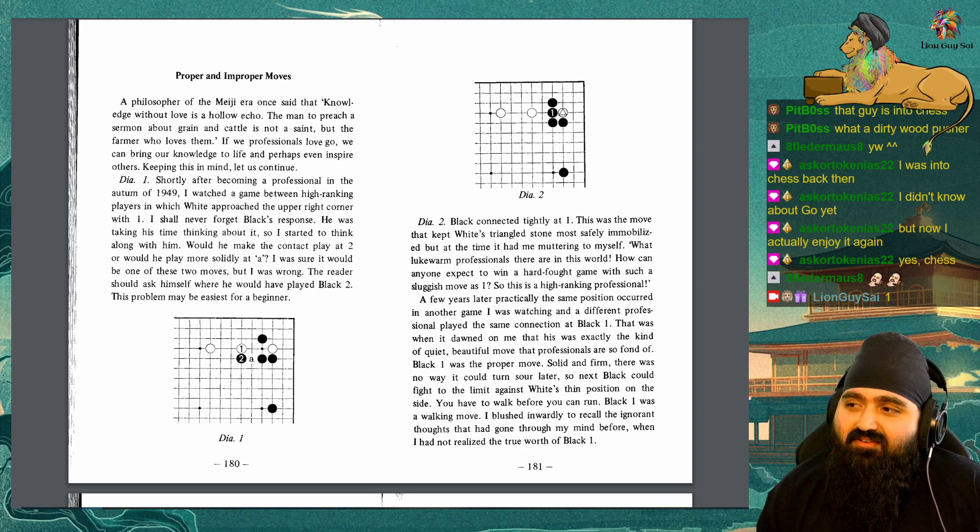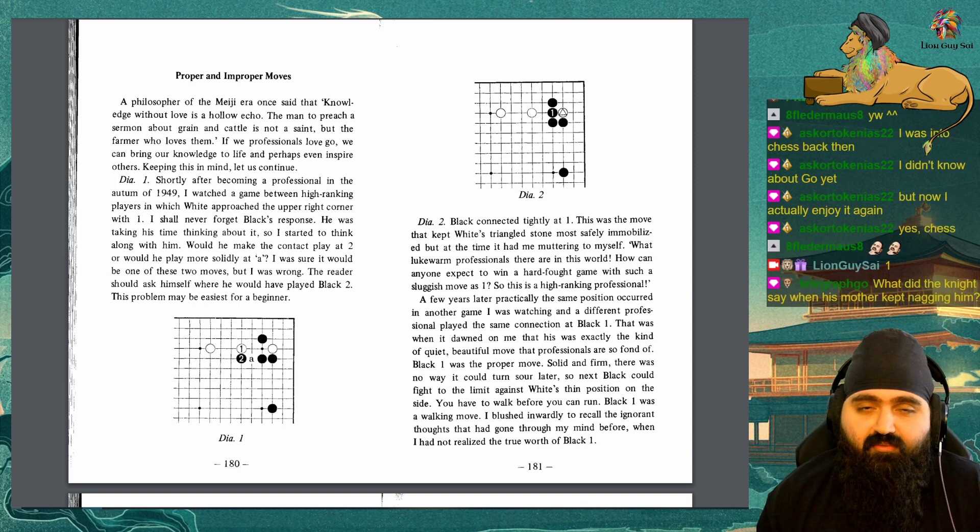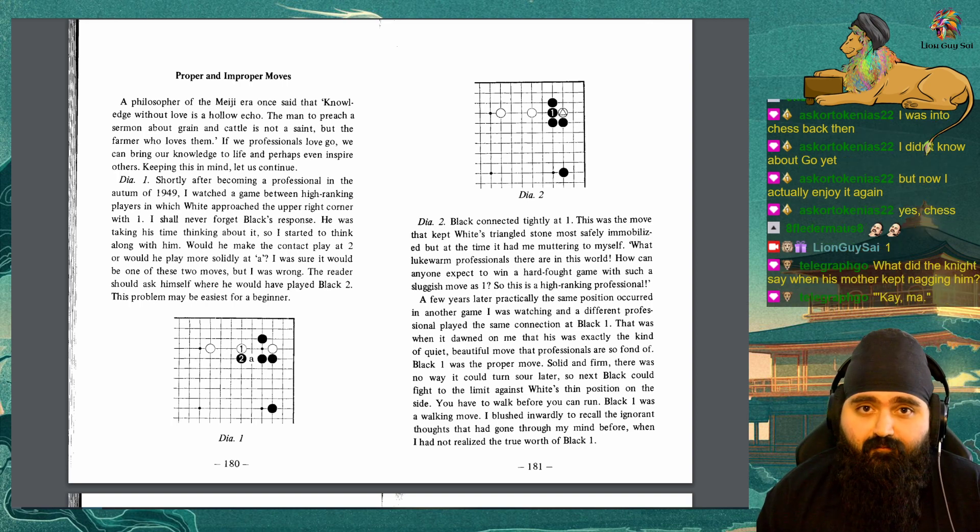Proper and Improper Moves. A philosopher of the Meiji era once said that knowledge without love is a hollow echo. The man to preach a sermon about grain and cattle is not a saint, but the farmer who loves them. If we professionals love Go, we can bring our knowledge to life and perhaps even inspire others. Keeping this in mind, let us continue. Diagram 1. Shortly after becoming a professional in the autumn of 1949, I watched a game between high-ranking players in which white approached the upper right corner with 1. I shall never forget Black's response. He was taking his time thinking about it, so I started to think along with him. Would he make a contact play at 2, or would he play more solidly at A? I was sure it would be one of these two moves, but I was wrong. The reader should ask himself where he would have played Black 2. This problem may be easiest for a beginner.